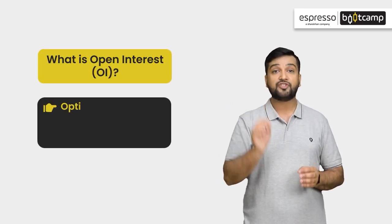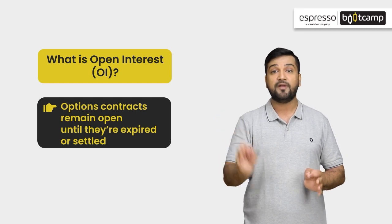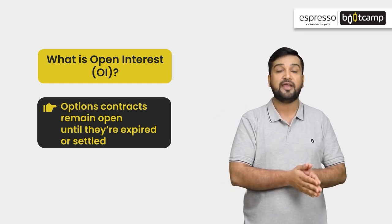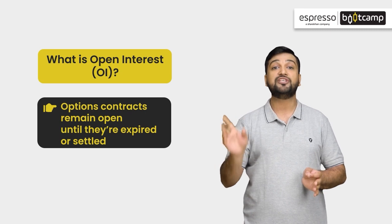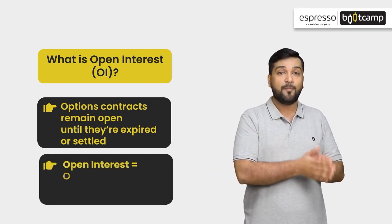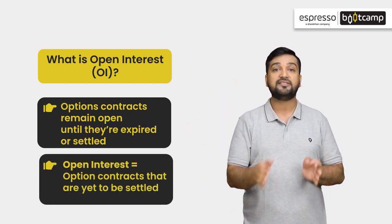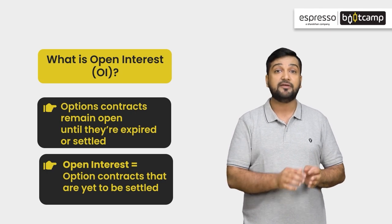No options contract is still open in the market until that contract doesn't expire or until it doesn't square off. Open interest is the options contract that is yet to be settled.